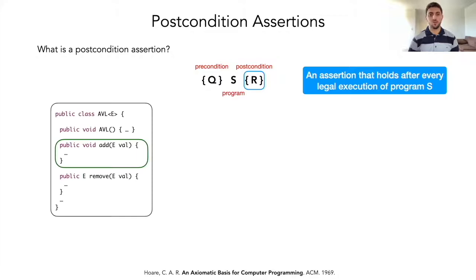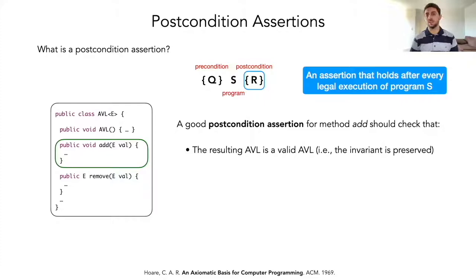For example, if we have an implementation of an AVL tree and we have a routine for inserting elements into the tree, a good post-condition assertion for method add should check that the resulting AVL is still a valid AVL, that is, the representation invariant is preserved, that the element we were trying to insert was effectively inserted, and that all previous elements in the AVL are still there.